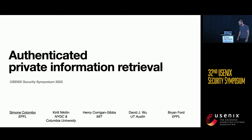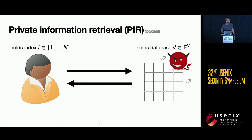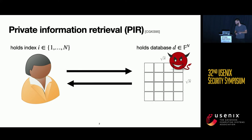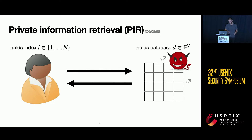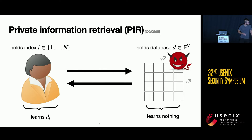Let's start with classic Private Information Retrieval protocols. In this kind of protocol we have a server that holds a database represented as a matrix, and a client, Alice, that holds an index of an entry in the database. The goal of the protocol is for Alice to learn the entry of the database corresponding to the index, and we want to ensure that the server learns nothing about Alice's query.